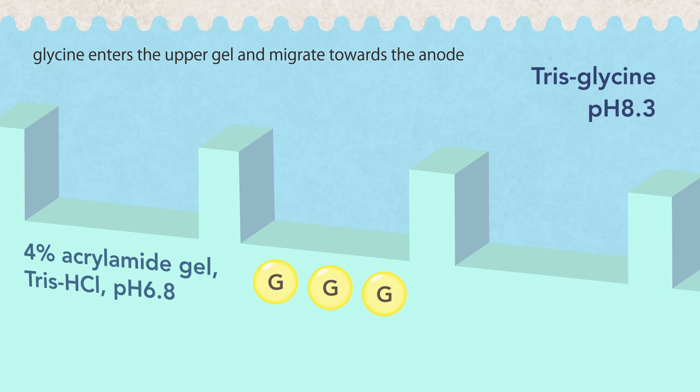Under a given electric field, glycine enters the upper gel and migrates towards the anode, but slows down significantly due to the switch of pH to 6.8, where glycine carries almost no charge.